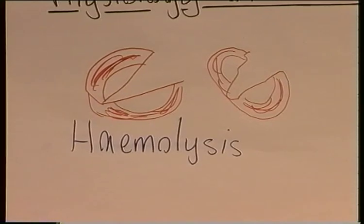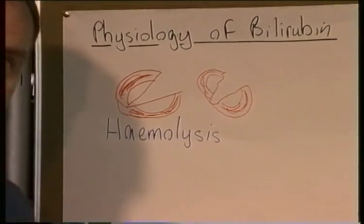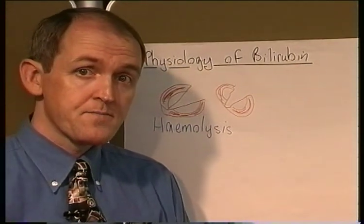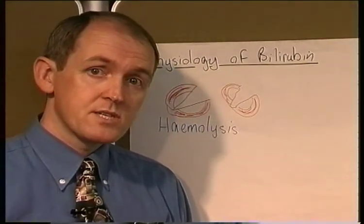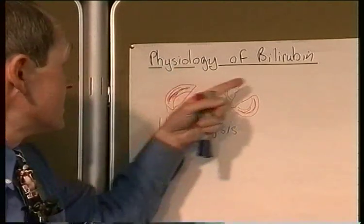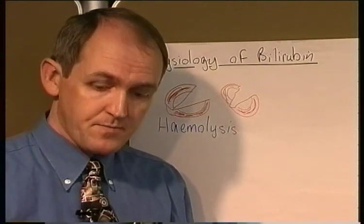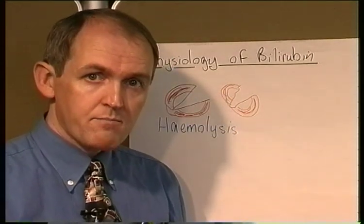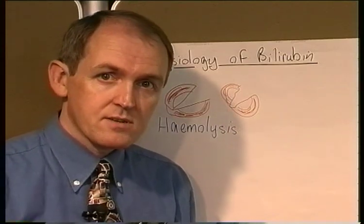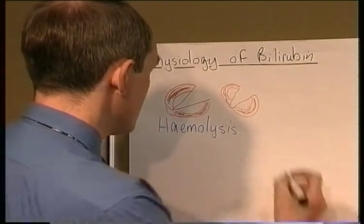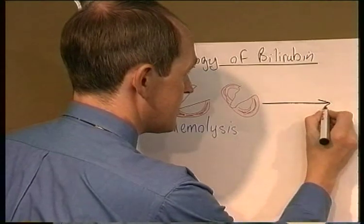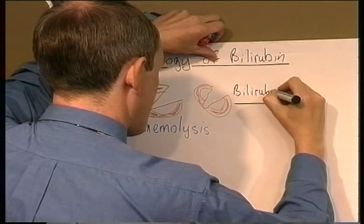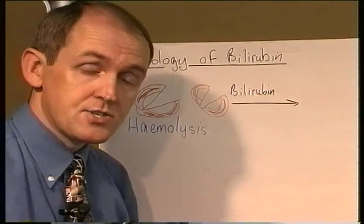Now, quite a few of the components of the red blood cells — the amino acids, for example — are recycled and used in other processes in the body. But one of the pigments that was in the haemoglobin molecule, the bilirubin, the body does not recycle. So what this means is that when red blood cells are broken up, bilirubin is produced as a byproduct of that process, and is released initially just into the bloodstream.